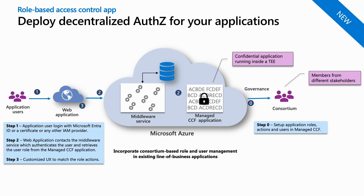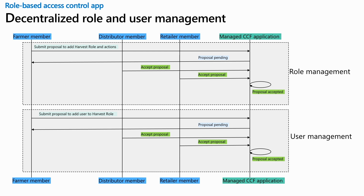In this demo, we will show how centralized authorization management can be decentralized by delegating it to a Managed CCF application, which immediately enables immutability, auditability, and traceability. In the Managed CCF application, the different members that are part of the application will become part of the consortium, which will set up the roles, actions, and the application users. Managed CCF can work with any identity provider that supports the OpenID Connect protocol. The top portion of the diagram shows role and action management being performed via governance, and the bottom portion shows the process for user management.